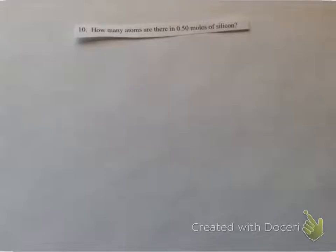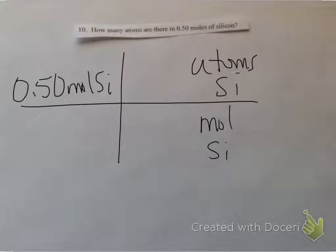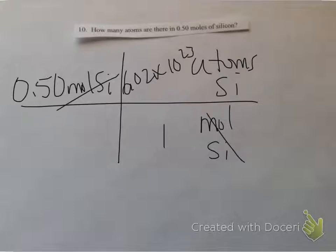Last problem: I have 0.50 moles of silicon and I want to know how many atoms that is. I start with my t-chart with 0.50 moles of silicon. I'm forced to put moles of silicon at the bottom. It's asking for atoms, and I'm allowed to put atoms with moles. So 1 mole goes next to mole silicon, and atoms get 6.02 times 10 to the 23rd. The moles cancel out. I multiply the top and divide by the bottom and get 3.0 times 10 to the 23rd atoms of silicon.